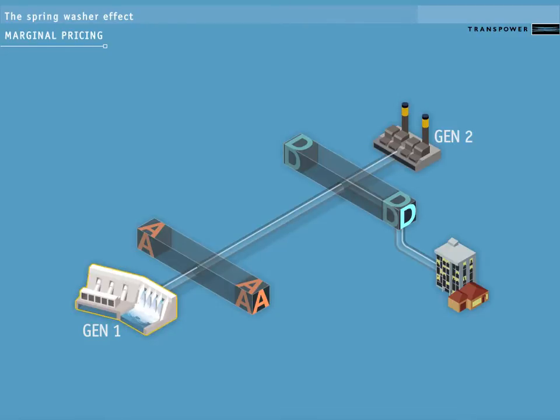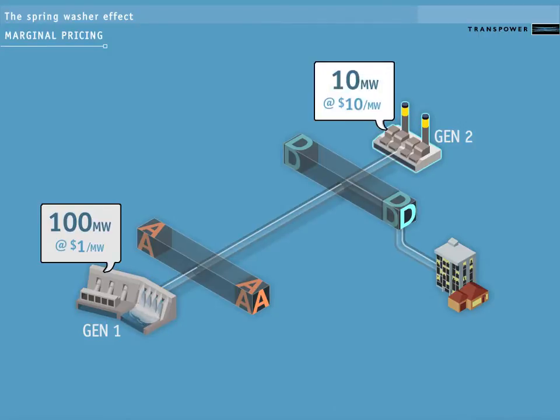Generator 1 is willing to offer up to 100 megawatts for $1 per megawatt. Generator 2 is willing to offer up to 10 megawatts for $10 per megawatt. The load requires 100 megawatts to be supplied.